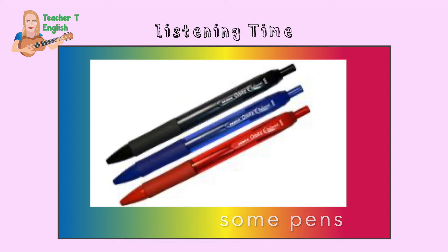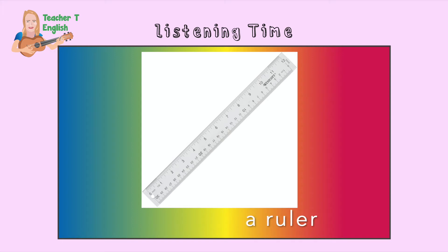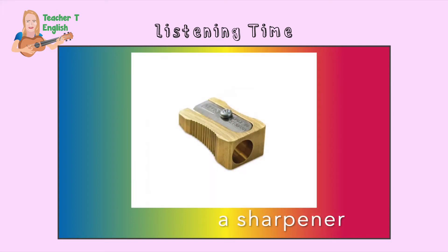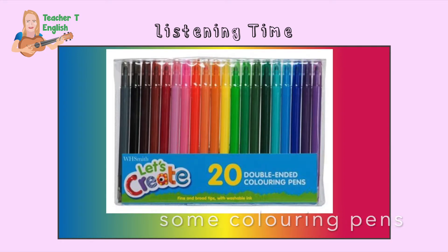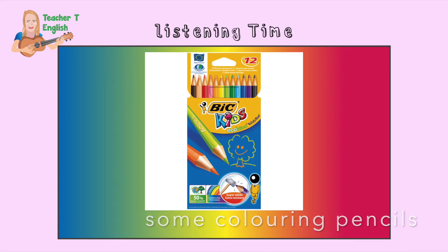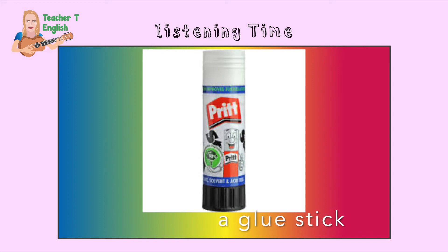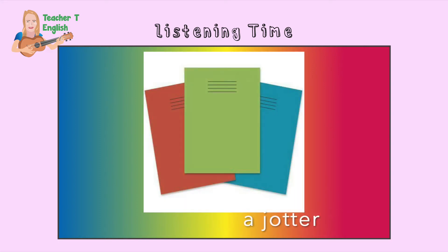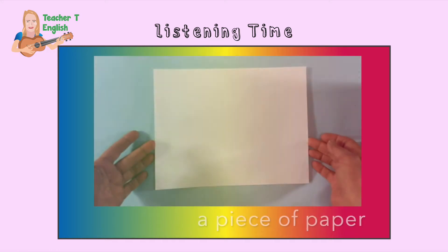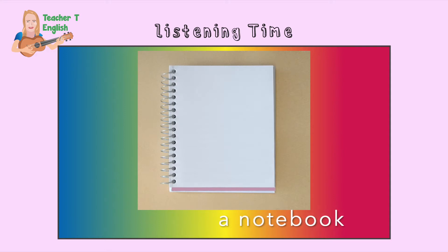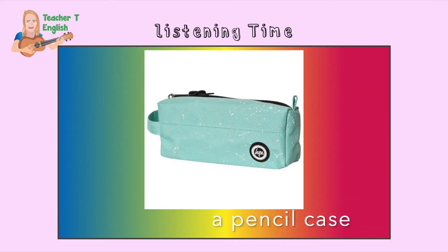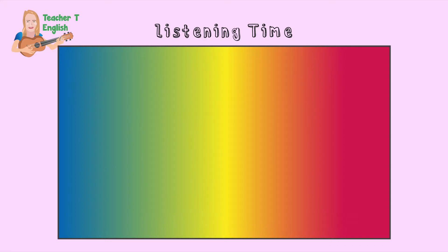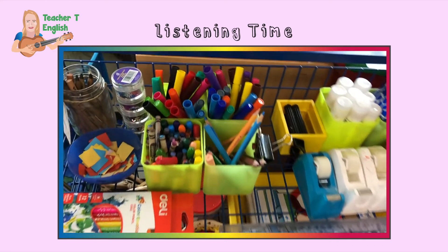Now let's practice vocabulary — repeat after me: an eraser, a pencil, some pens, a ruler, a sharpener, some coloring pens, some coloring pencils, a glue stick, a jotter, a piece of paper, a notebook, a pair of scissors, a pencil case. Well done speaking!